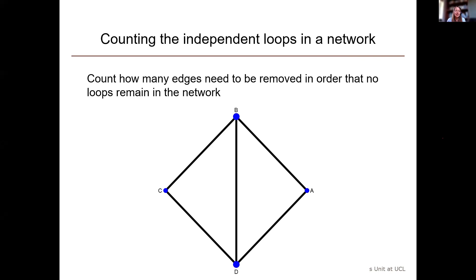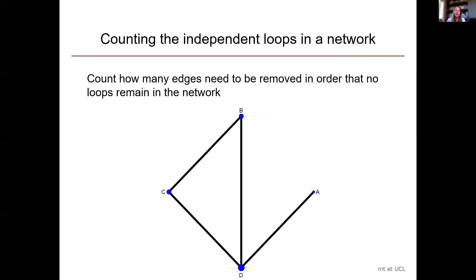To remove a loop, we can take away one edge, and then we're left with one loop rather than two. We can take away another edge, and we have no loops left in the network. This means that because we had to take away two edges, we have two independent loops in the network.